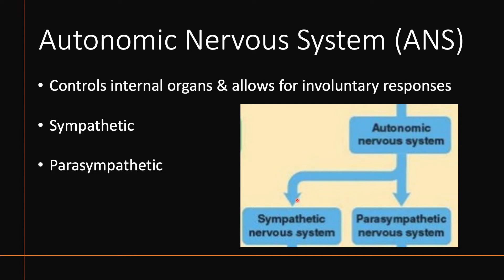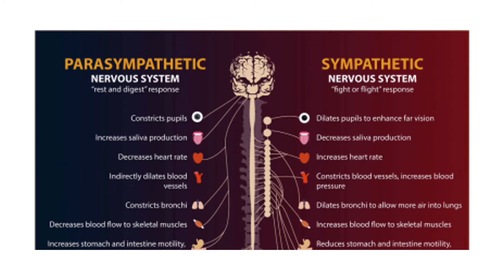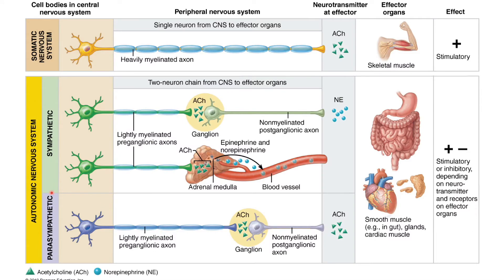Let's focus on the autonomic nervous system, which controls the involuntary responses of the body. We have two divisions: sympathetic (fight or flight) and parasympathetic (rest and digest). This diagram is the detailed, important part of the lecture — it may have been confusing in class, so let's break everything down carefully. This diagram appears everywhere in anatomy classes and is always referenced on exams.